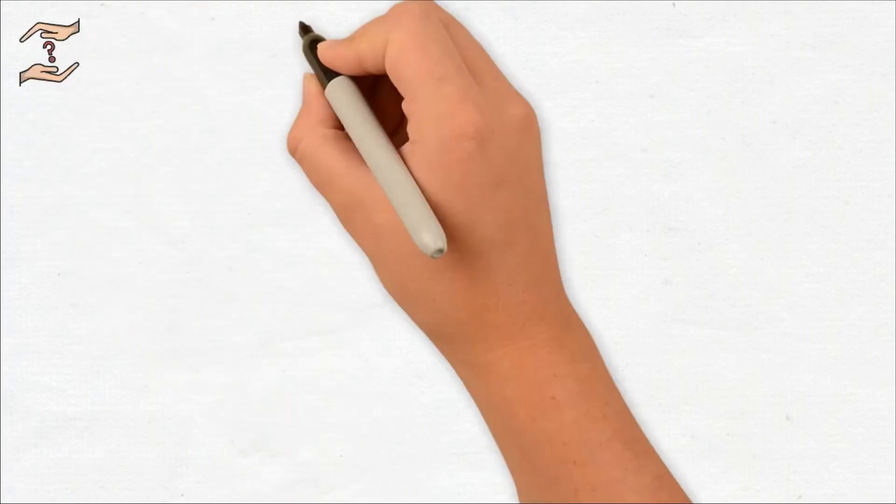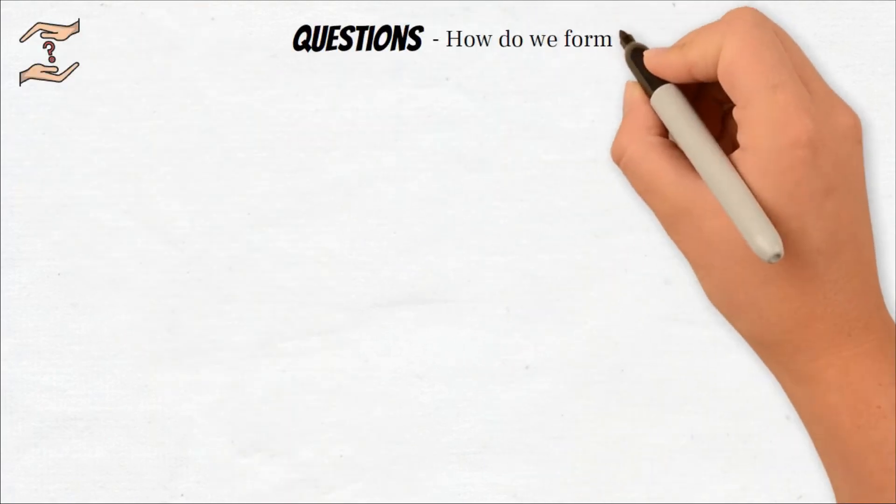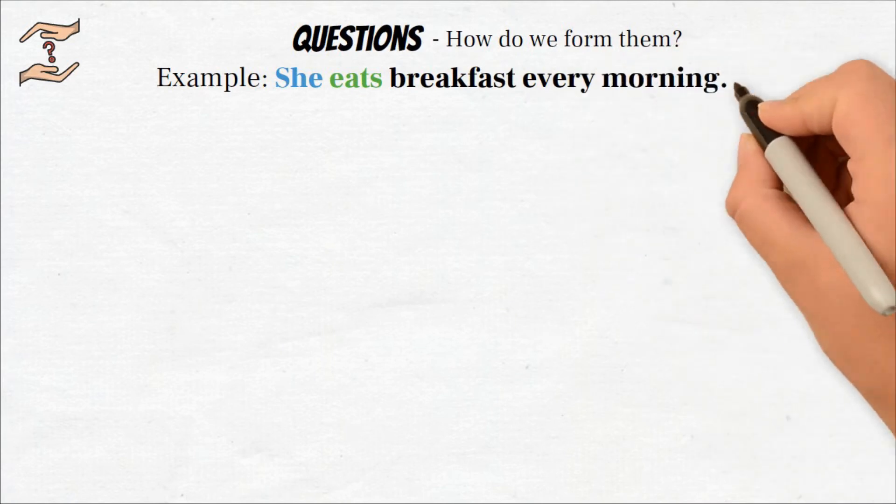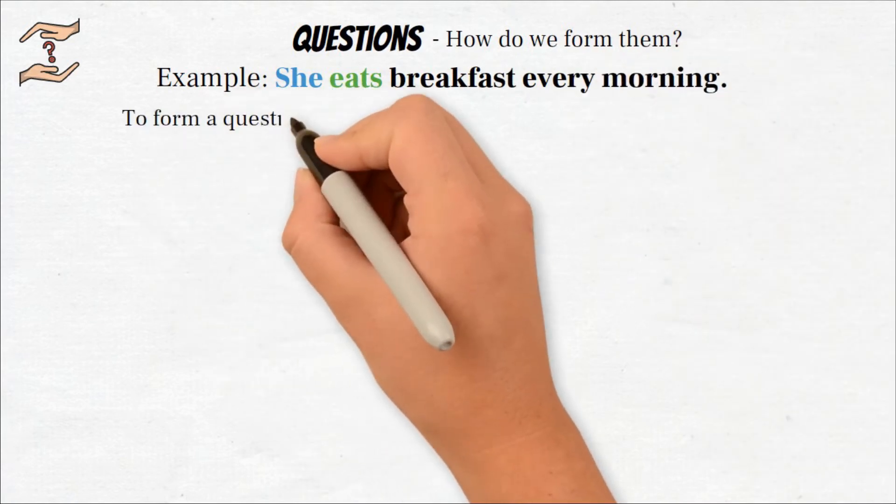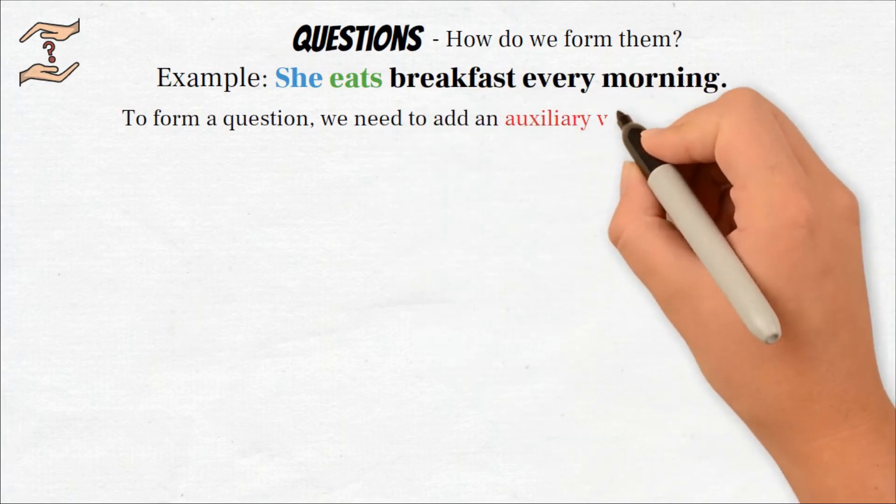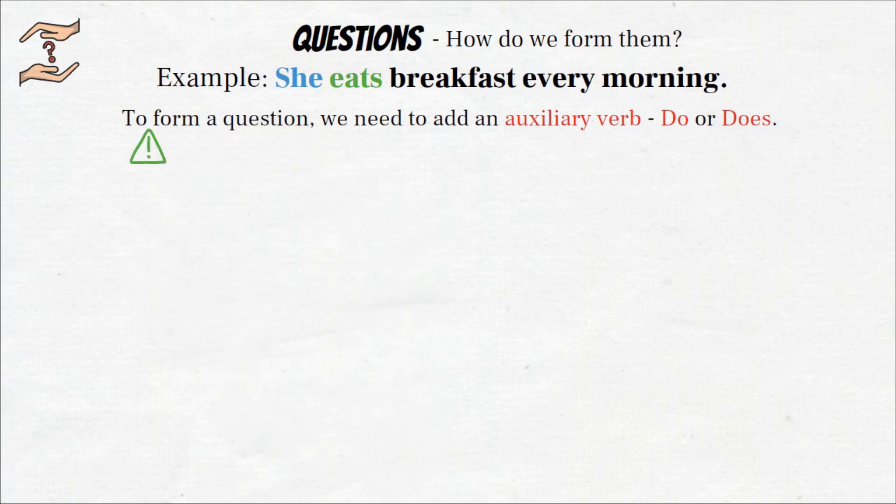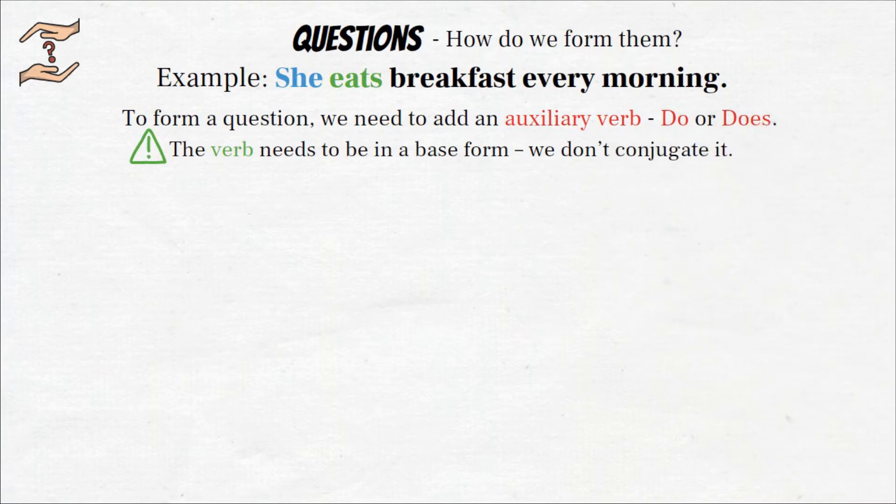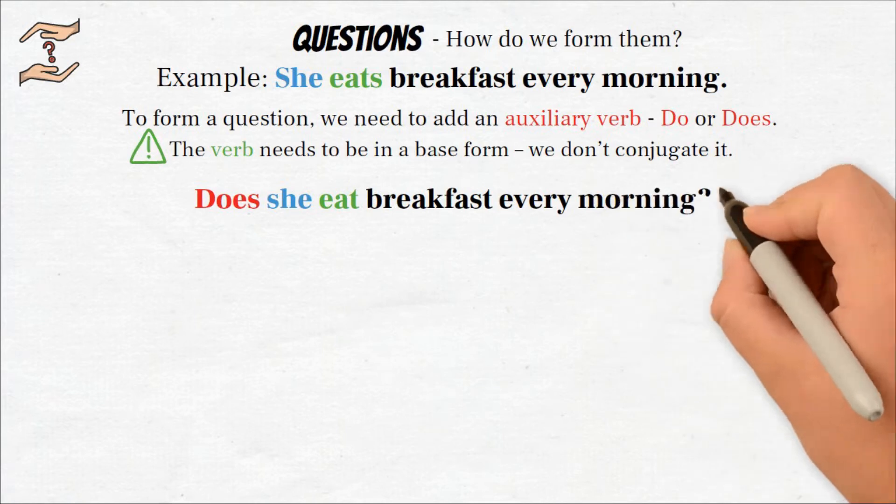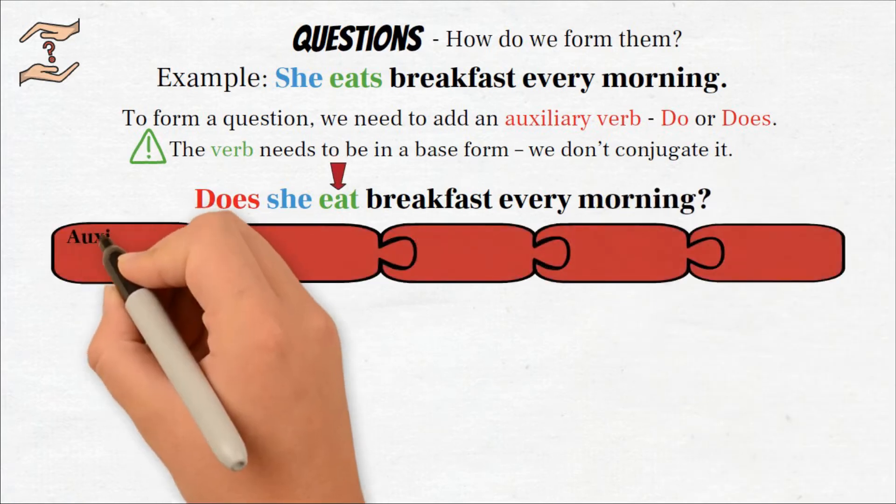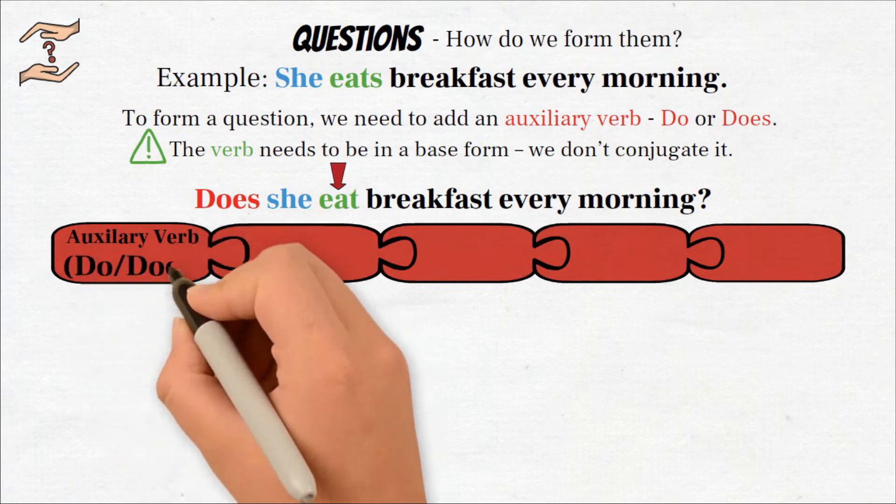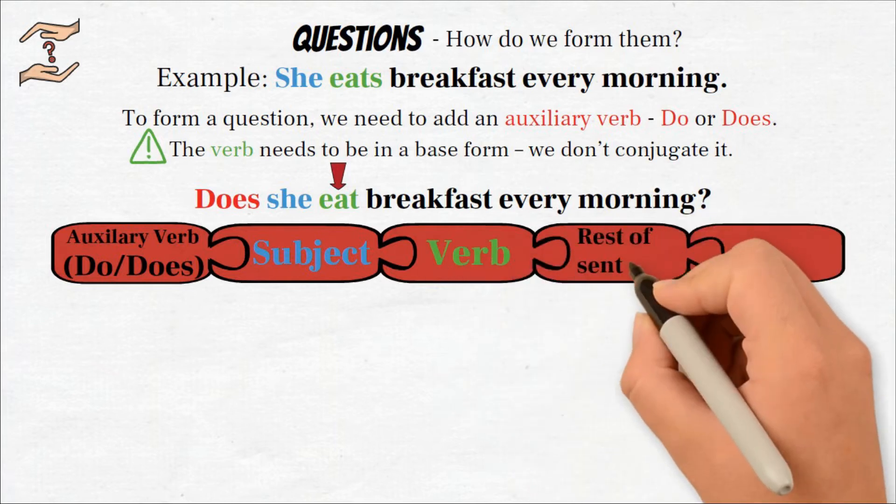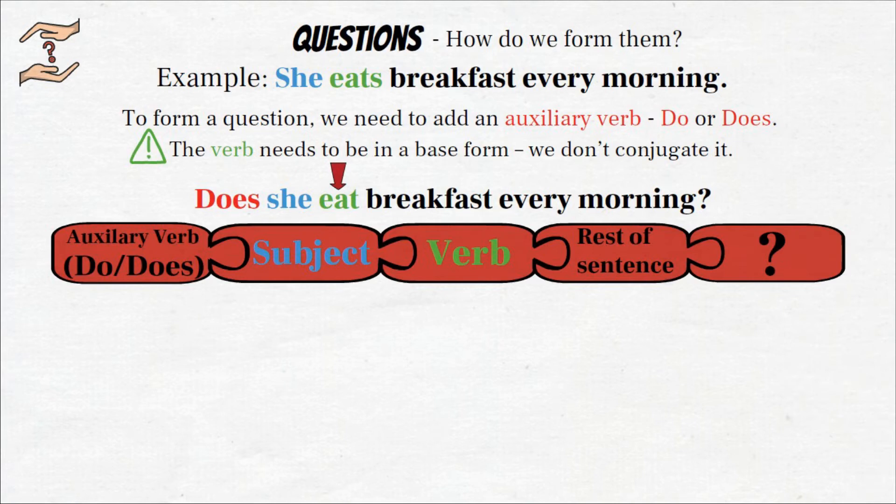Again, you can also shorten the negation to isn't: she isn't hungry, or shorten the subject to she's: she's not hungry. As you can see, there are a few ways to form a negative sentence. Let's now look at a question. How do we form the questions? Let's see our example again: she eats breakfast every morning. To form a question, we need to add an auxiliary verb do or does. Also remember that the verb needs to be in a base form. We don't conjugate it. Does she eat breakfast every morning?